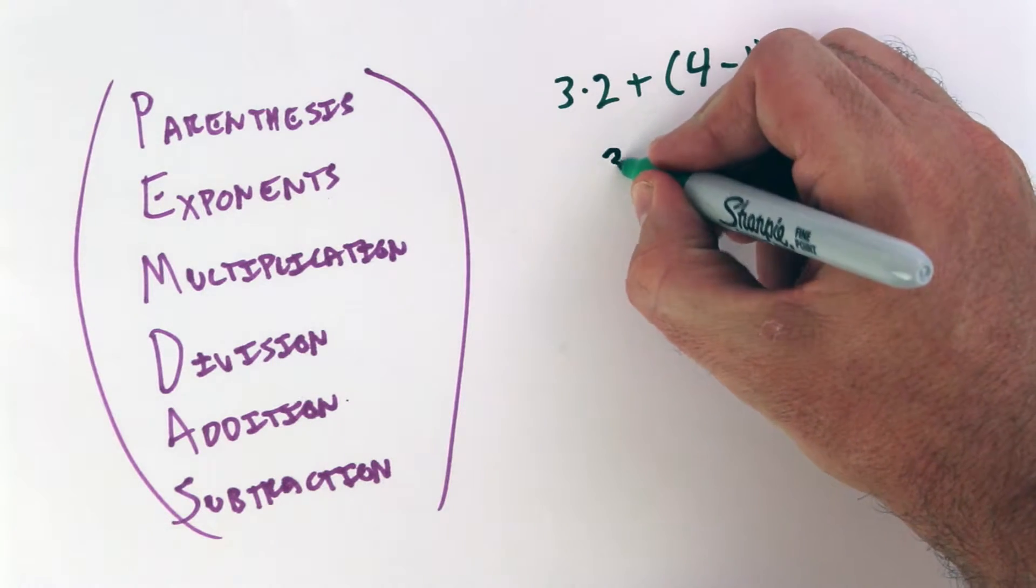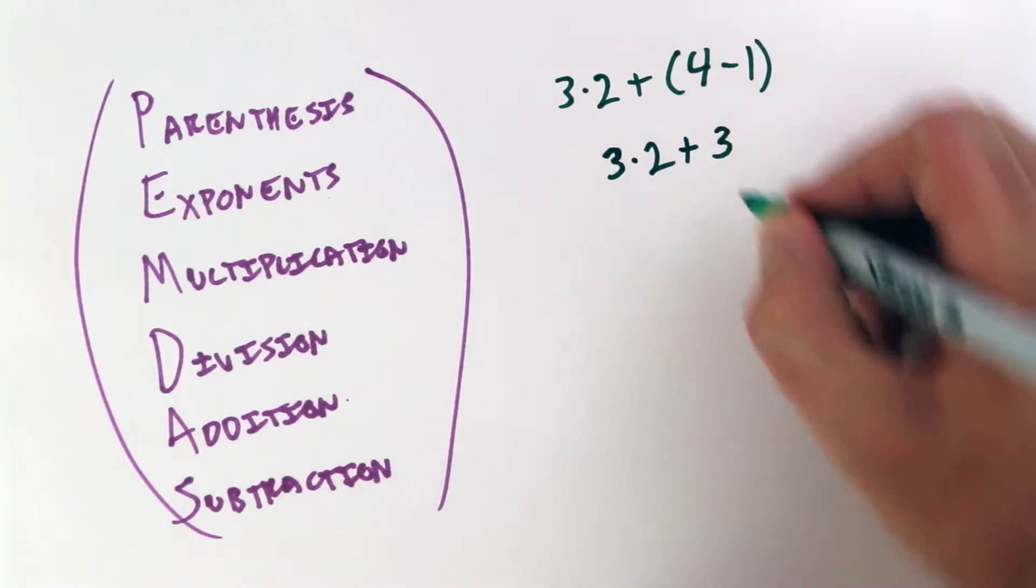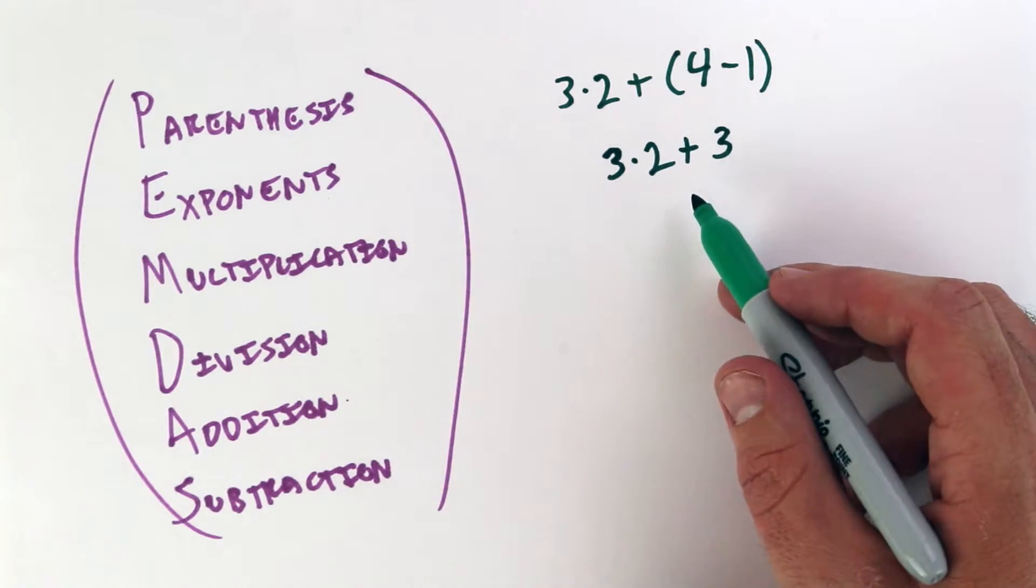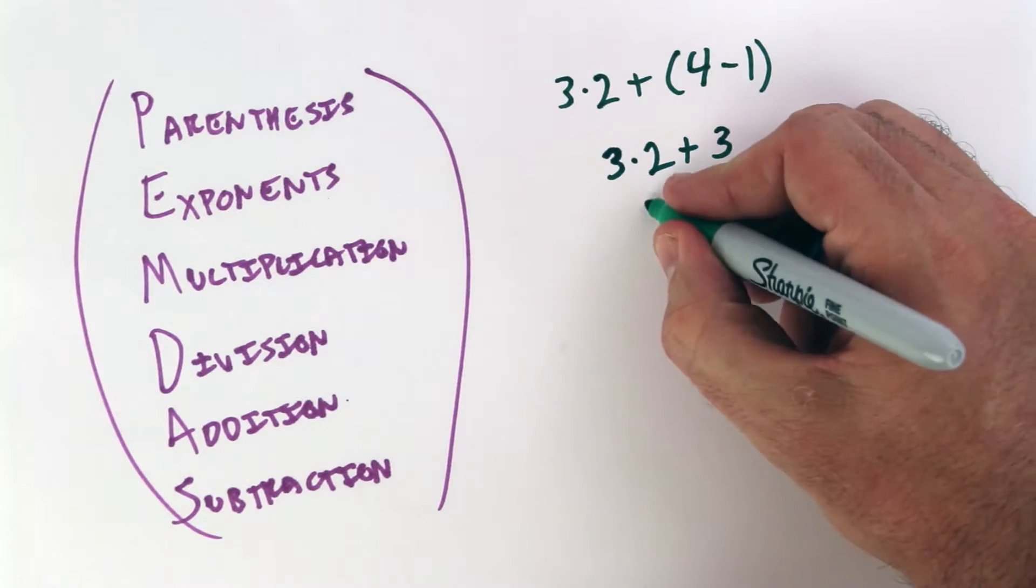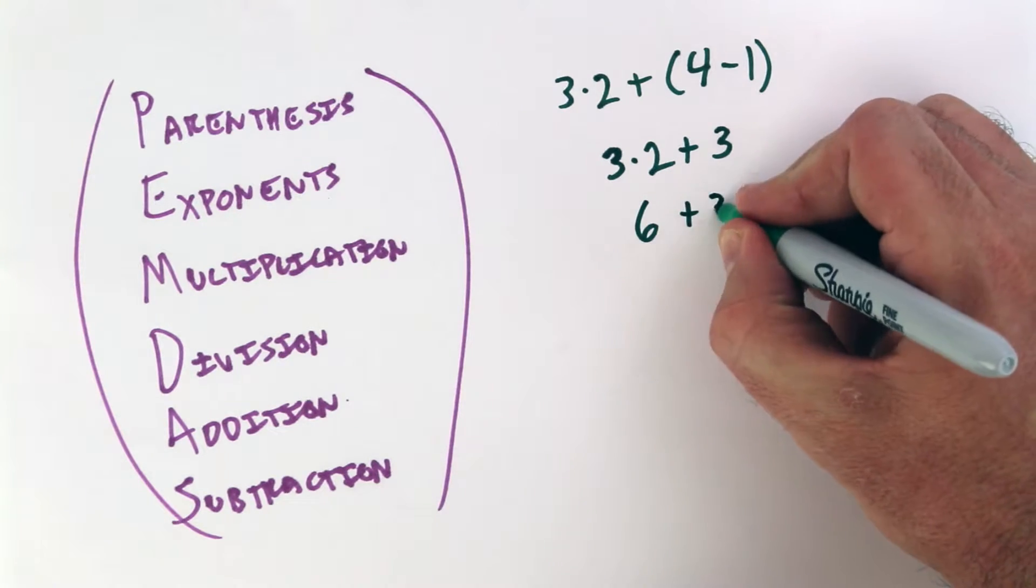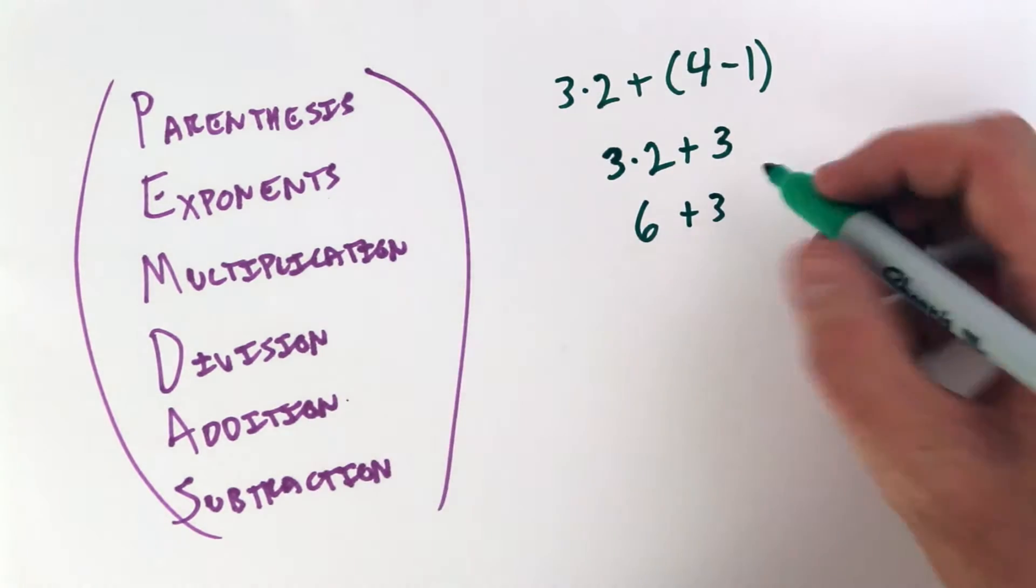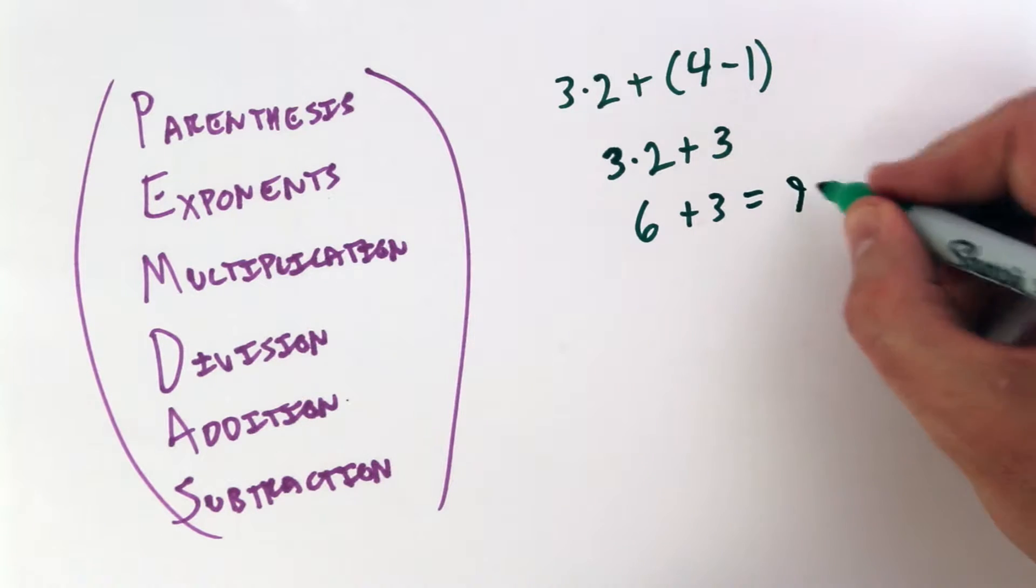And over here, you still have 3 times 2 plus 3. What do we do next? Multiplication. 3 times 2 is 6 plus 3. Now all we have left is addition equals 9.